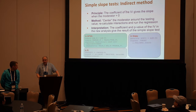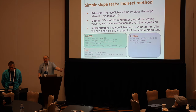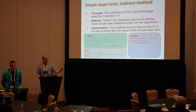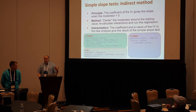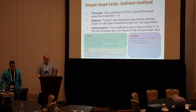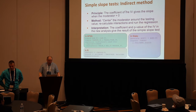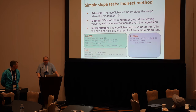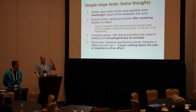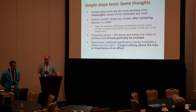So if you want to test the simple slope at, say, age equals 60, one thing you could do is just subtract 60 from the age variable, rerun the regression with this new version of the age variable, and the coefficient of training will then give the simple slope test for age 60. That will become more useful with more complex models, but just a few thoughts about simple slope tests in general.